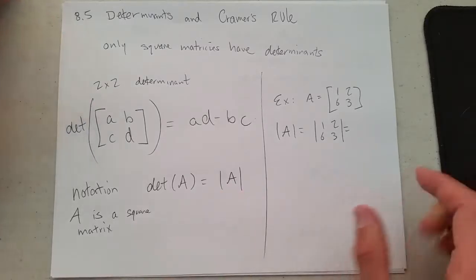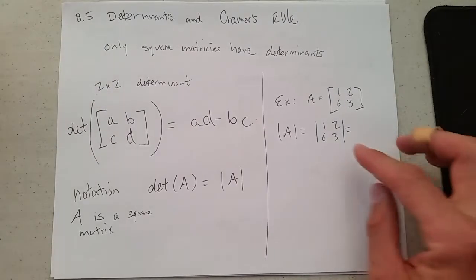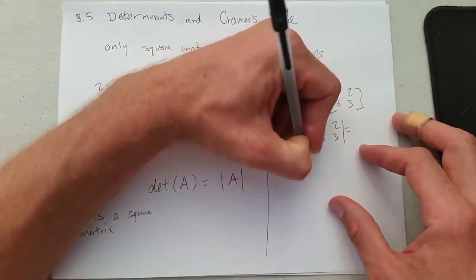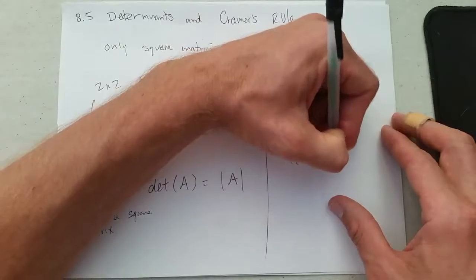There are a few ways to write determinant. You could write determinant of A as a function, or you could write it as absolute value. That's another way, a faster way to write it.